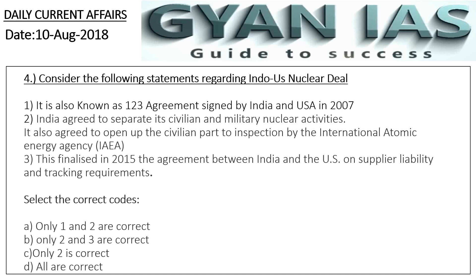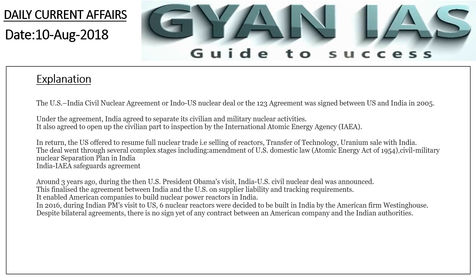The first statement is wrong because, although the Indo-US nuclear deal is also called the 123 Agreement, it was signed in 2005 and not 2007. Hence Option B — statements 2 and 3 are correct — is the correct answer.